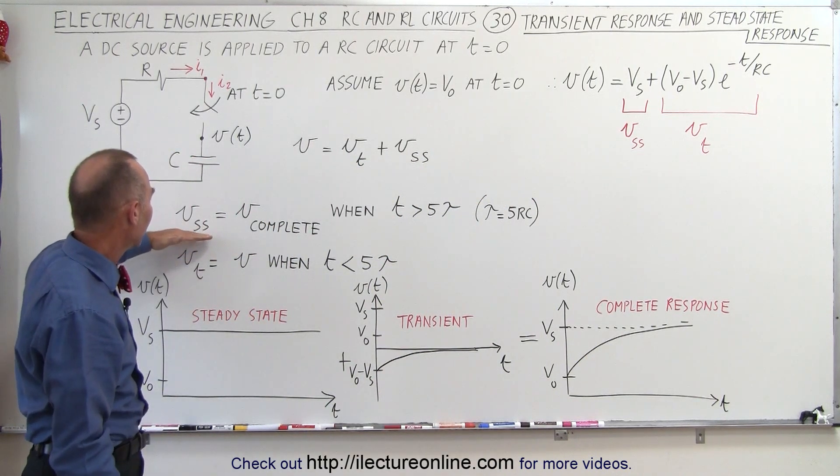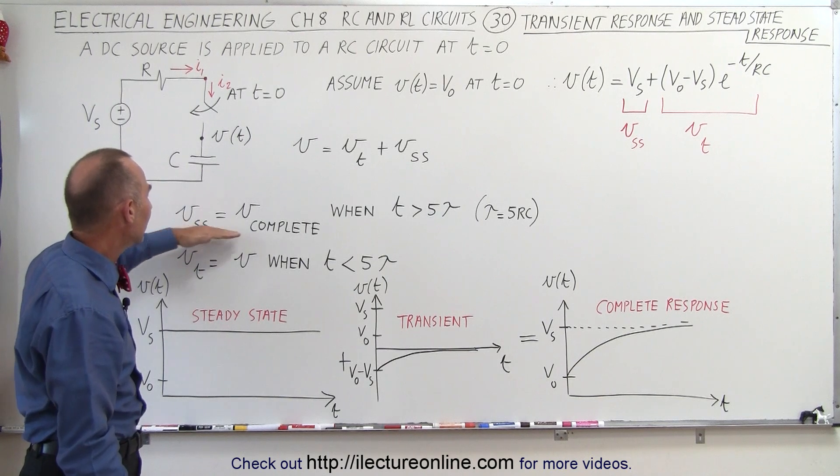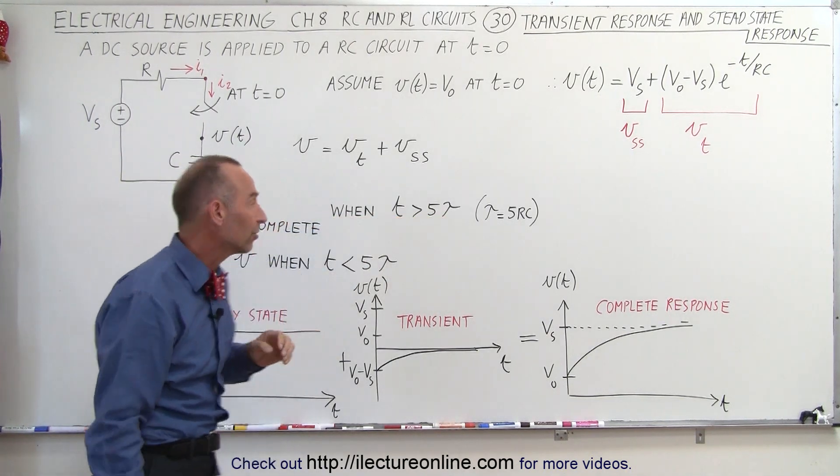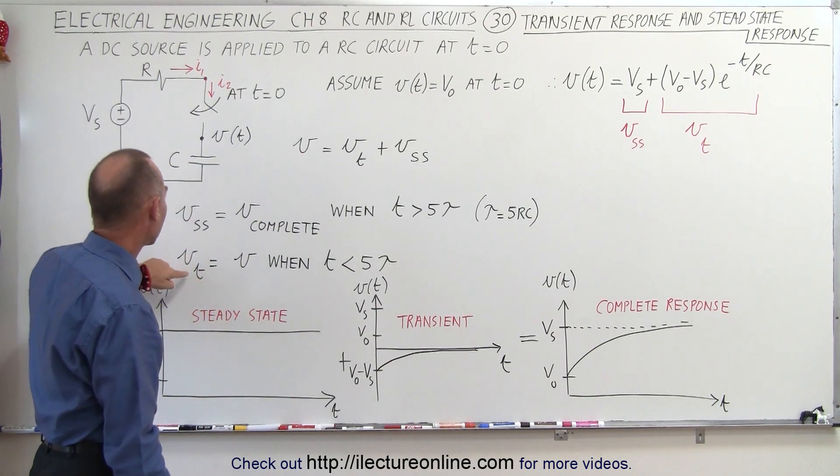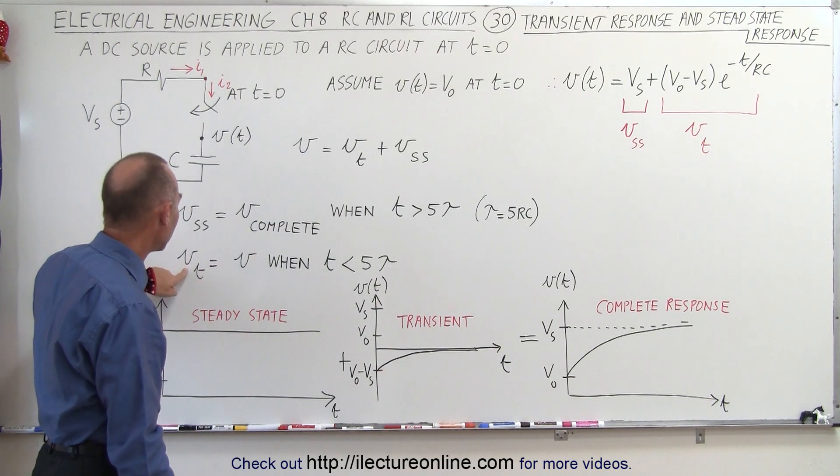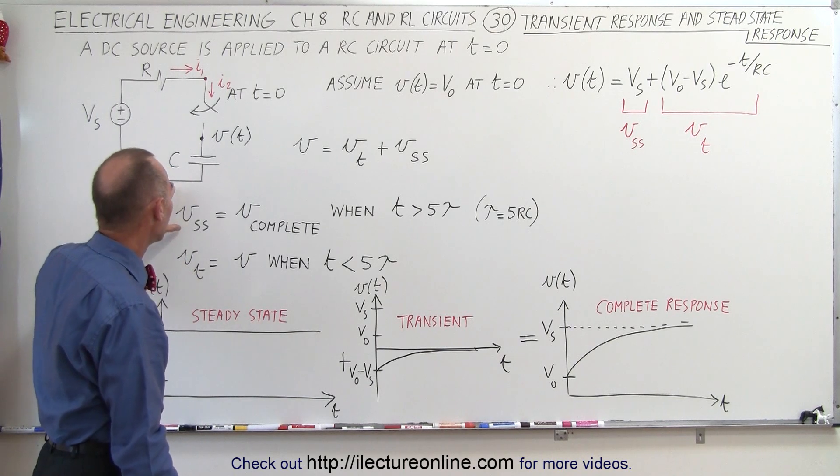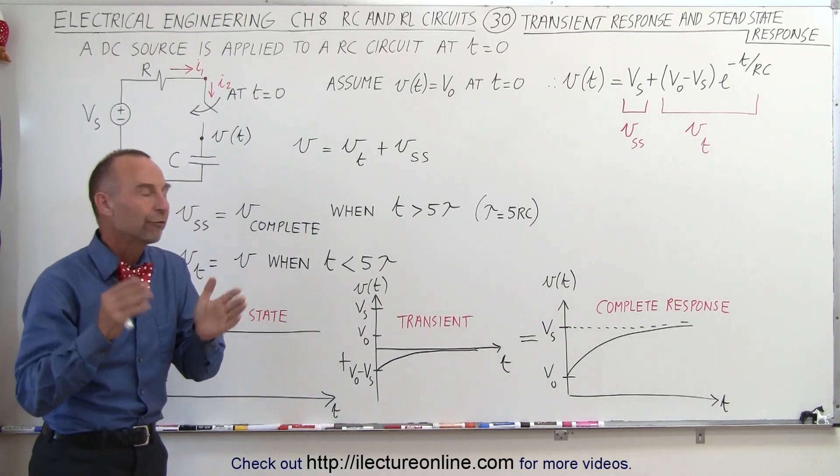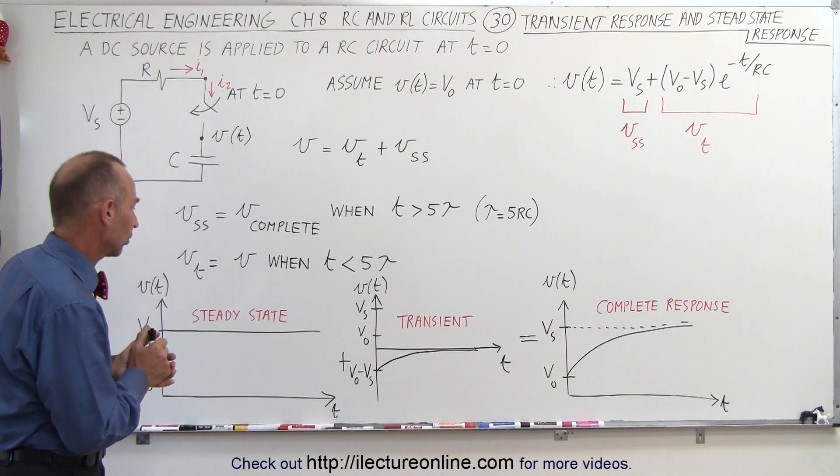So we could say that the steady-state is equal to the complete response when the time is greater than five time constants, and when the time is less than five time constants, we also have the transient response, which is added to the steady-state response. So the two together is the response you get during the first five time constants of the circuit.